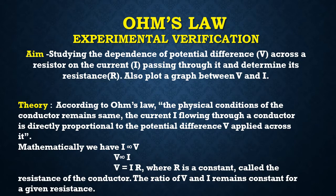According to Ohm's Law, when the physical conditions of the conductor remain the same, the current I flowing through a conductor is directly proportional to the potential difference V applied across it. So we know I is proportional to V, or V is proportional to I — that is, V equals IR, where R is a constant called the resistance of the conductor. The ratio of V and I remains constant for a given resistance.